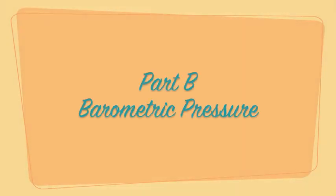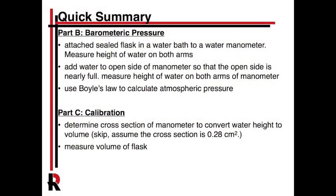My general recommendation is to do Part B first because it requires a constant temperature. When you do Part A, you heat up and cool the flask, which throws off the temperature for Part B. So do Part B first, measuring the barometric pressure. You'll put the sealed flask on the water manometer, measure the height of the water in both arms with a ruler, then add a good bit of water to the open side - almost up to the top of the scale, around 40 centimeters - let it equilibrate for a few minutes, then measure the height on both sides.